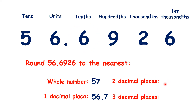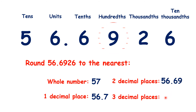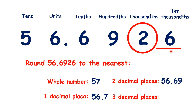If we want to round to two decimal places, we find our hundredths, look to our thousandths, and that 2 in our thousandths tells us that we need to round down. And for three decimal places, we find our thousandths, look along to the next place value, and we need to round up, so we have 56.693.